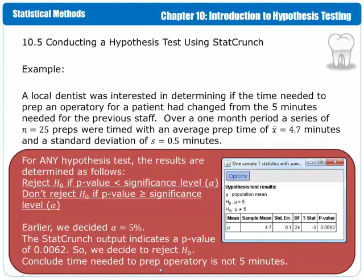In so doing, we conclude that the time needed to prep the operatory is not equal to 5 minutes. Now you can see that 4.7 obviously is not 5 minutes, but the hypothesis test is looking to see how close or how far away is that sample mean from what we hypothesized. If it's really, really close, then we don't reject the null hypothesis. And 4.7 seems really, really close to 5, but it's not close enough. The test does that by looking at the t-distribution, and in this case it determined that 4.7 is not close enough to 5.